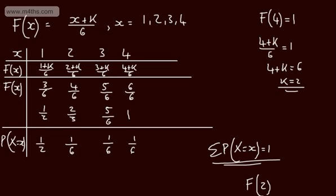So there we go — a brief introduction to the cumulative distribution function. It's simply saying the probability that x is going to be less or equal to the observed values. F of 1 is the probability that x is 1 or less, F of 2 the probability that x is 2 or less, F of 3 the probability that x is 3 or less, and so on. In the next video, we will look at some more work with discrete random variables.